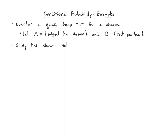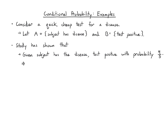We've done a study and our study has convinced us that given that the subject has the disease, this test is positive with probability four-fifths, so 80% of the time. That tells us the probability of B given A is four-fifths. The complement property also tells us that the probability of B complement given A is one-fifth, because probabilities have to add up to one. So given that the subject has the disease, the test is negative with probability one-fifth — the other 20% of the time.